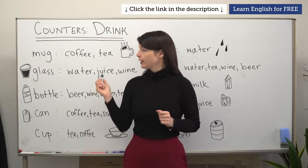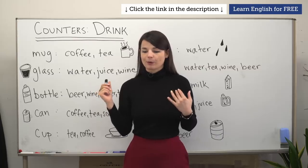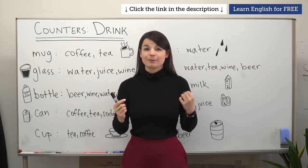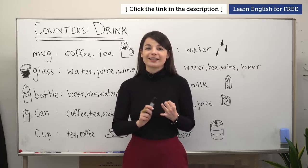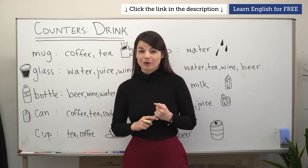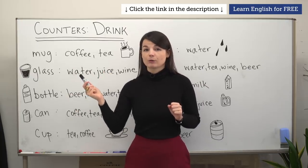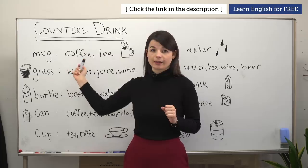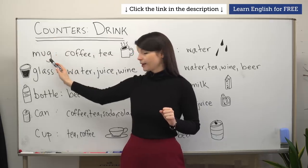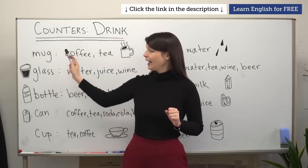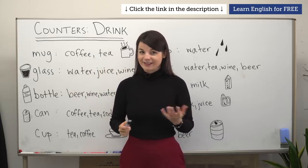Before we begin, I want to mention that an easy hint for counting drinks is to remember that we often count drinks according to the container they are sold in or the container they are served in. This can help make it really easy to choose your counter word when you're thinking about drinks. Also, you'll notice that each one of these counter words is followed by the word 'of.' Remember to use your number before the counter word, then the counter word, then 'of,' and finally your noun — the item you're counting. Let's take a look at a few ways that we can count liquids and drinks.